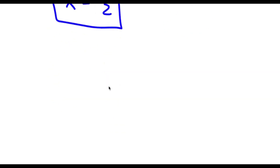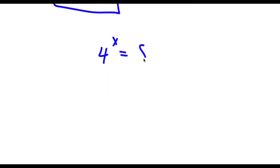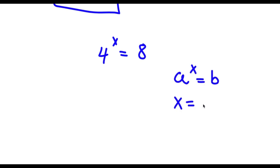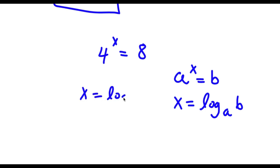Now another way of solving this problem: I have 4 to the power of x equals 8. If I have something in the form a to the power of x is equal to b, this means that x is equal to log base a of b. So in this case x is going to equal log base 4 of 8.